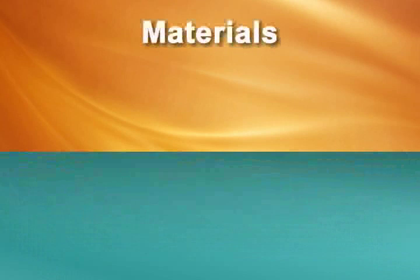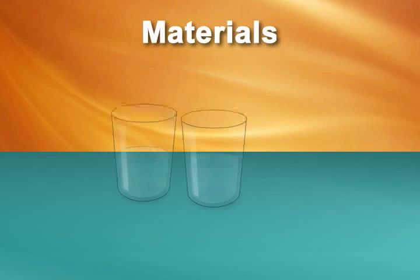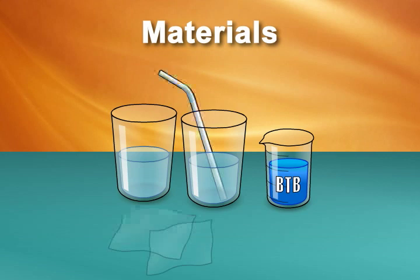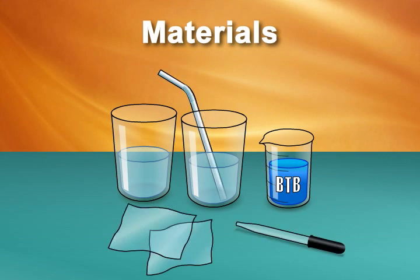For the first part of this experiment, you'll need two clear plastic cups filled half full of water, .04% bromothymol blue indicator solution, or BTB, a flexible straw, two small squares of plastic wrap, and an eyedropper.